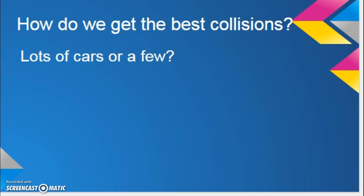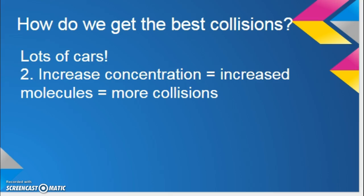How do we get the best collisions — if we have lots of cars or only a few? Especially since they're traveling at different speeds, you want lots of cars. Same thing with chemical collisions: increasing concentration — in other words, having more of the chemicals in the beaker — means more molecules, which means more collisions.